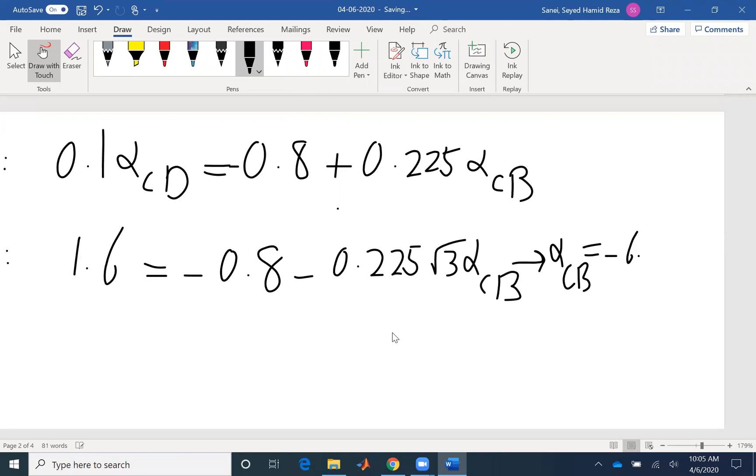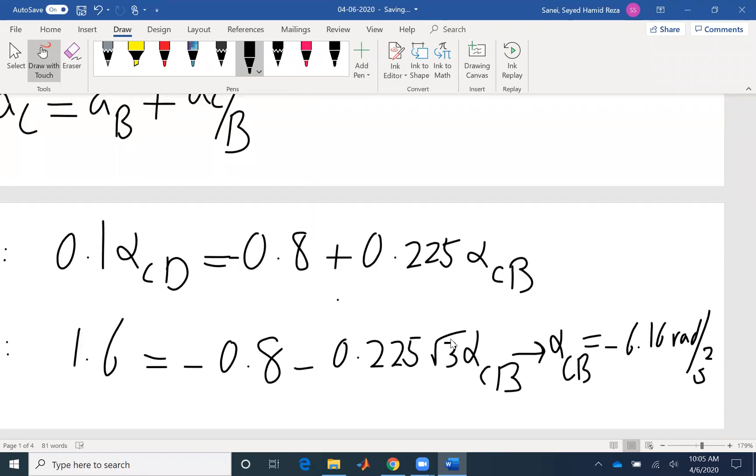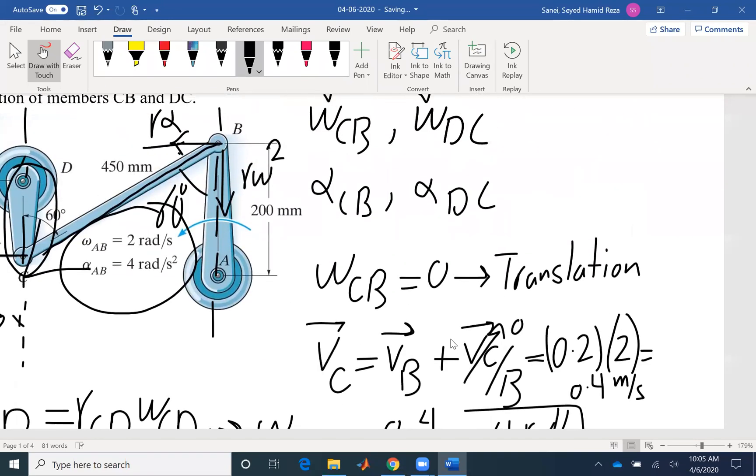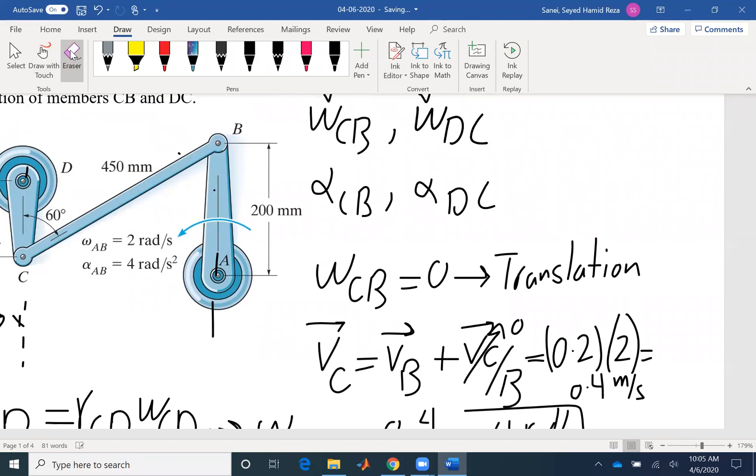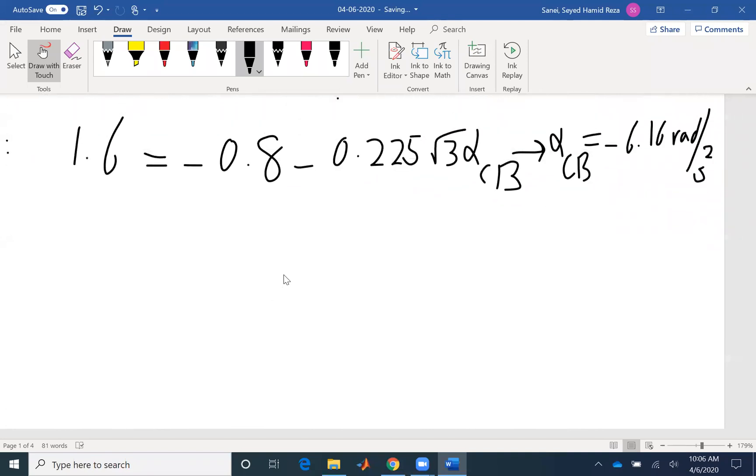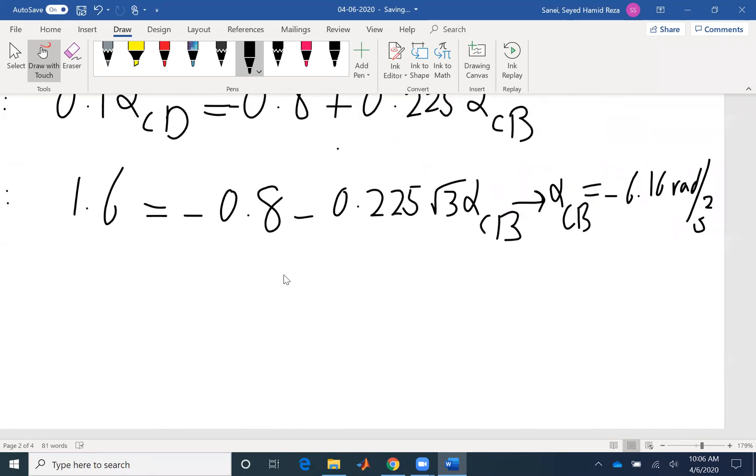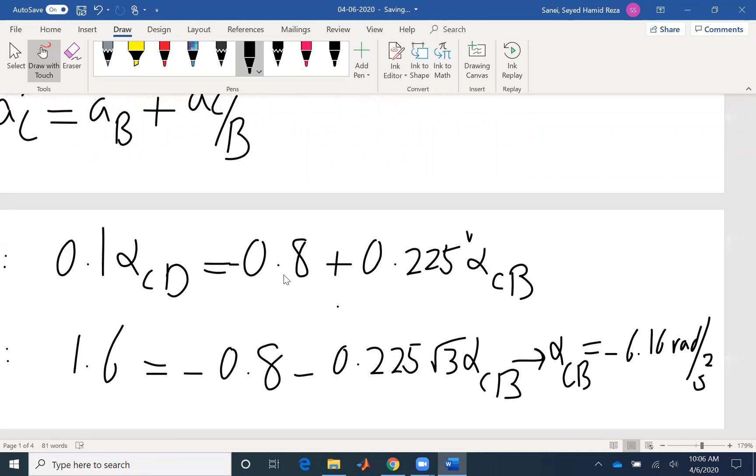So you can see I found a negative value, which means that the assumption that alpha CB is counterclockwise is incorrect and it's actually rotating clockwise in this direction. For alpha CB, by inspection we can see that it is rotating clockwise. But you can always assume counterclockwise; if you find a negative value it's clockwise. Or from the very beginning of the problem, by inspection you can identify the direction and move forward with that. So once you have alpha CB, I can replace it in the first equation here and find alpha CD. So based on that, alpha CD would be negative 21.86 radians per second squared.